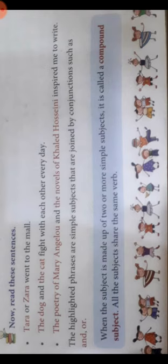Went to the mall is your predicate. Another example: The dog and the cat fight with each other every day. Who fight with each other every day? The dog and the cat. The dog and the cat is your compound subject. Fight is your verb, and fight with each other every day is your predicate.